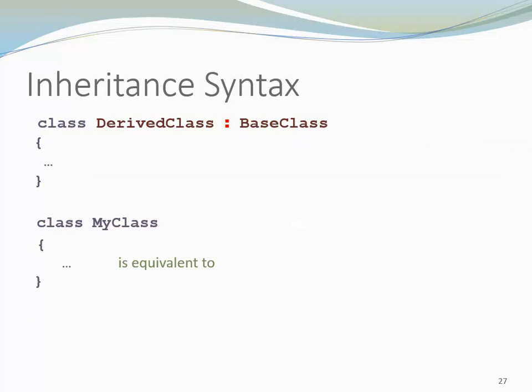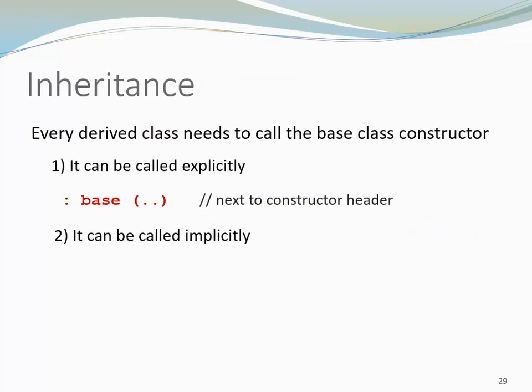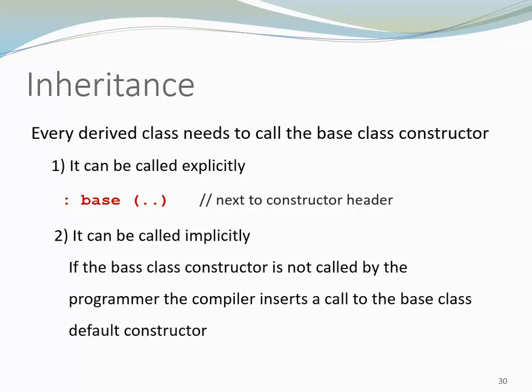Sometimes we see a simple class header. In this case, the class derives from system object. There is no need, though, to specify that explicitly. Every derived class needs to call the base class constructor. It can be called explicitly with colon, base, and the argument list next to the constructor header. Or it can be called implicitly — if the base class constructor is not called by the programmer, the compiler inserts a call to the base class default constructor.